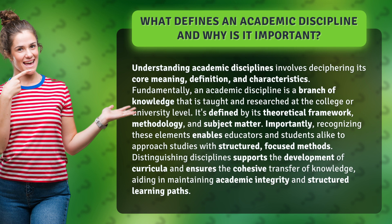Fundamentally, an academic discipline is a branch of knowledge that is taught and researched at the college or university level. It's defined by its theoretical framework, methodology, and subject matter. Importantly, recognizing these elements enables educators and students alike to approach studies with structured, focused methods.